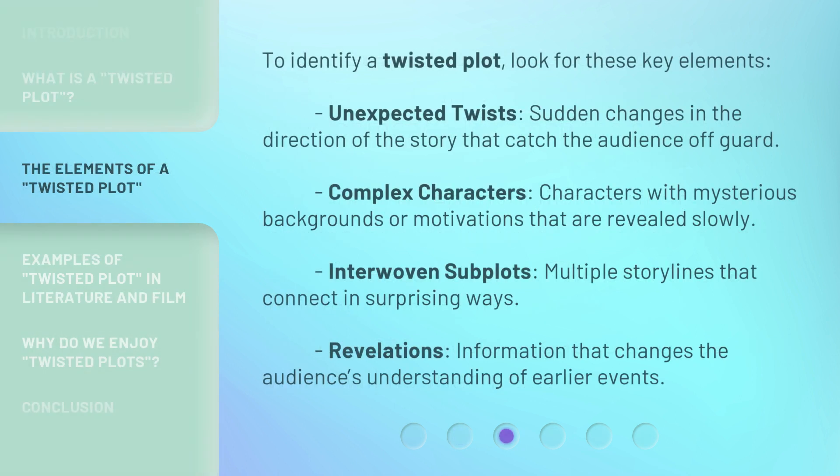To identify a twisted plot, look for these key elements: Unexpected twists — sudden changes in the direction of the story that catch the audience off guard. Complex characters — characters with mysterious backgrounds or motivations that are revealed slowly. Interwoven subplots — multiple storylines that connect in surprising ways. Revelations — information that changes the audience's understanding of earlier events.